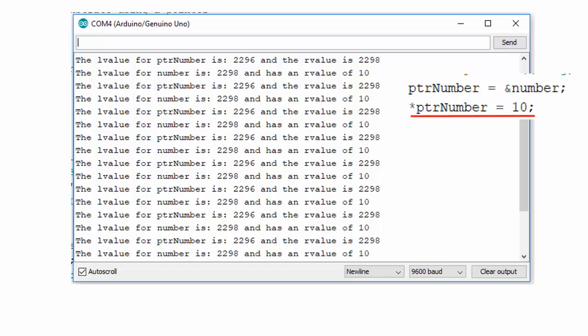Next, you used the indirection operator to assign the value of 10 into the variable number. Also note that the r value of pointer variable is the l value or address of the variable number.